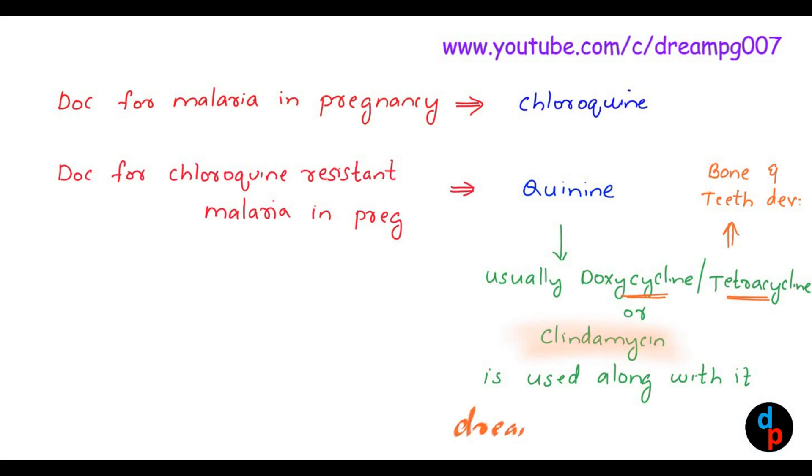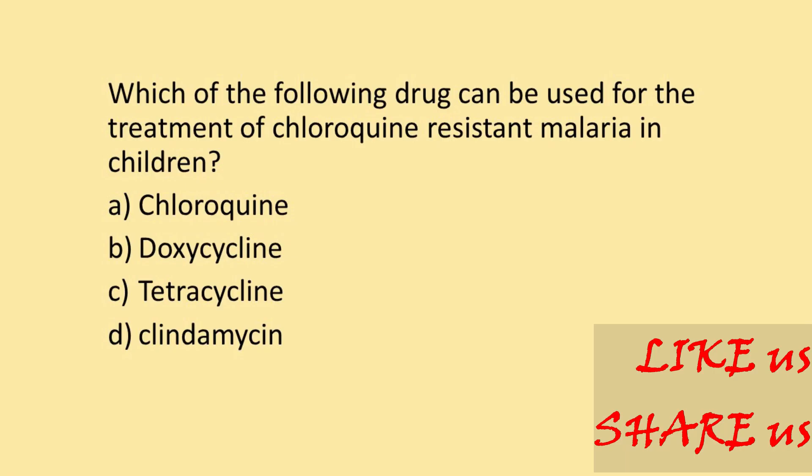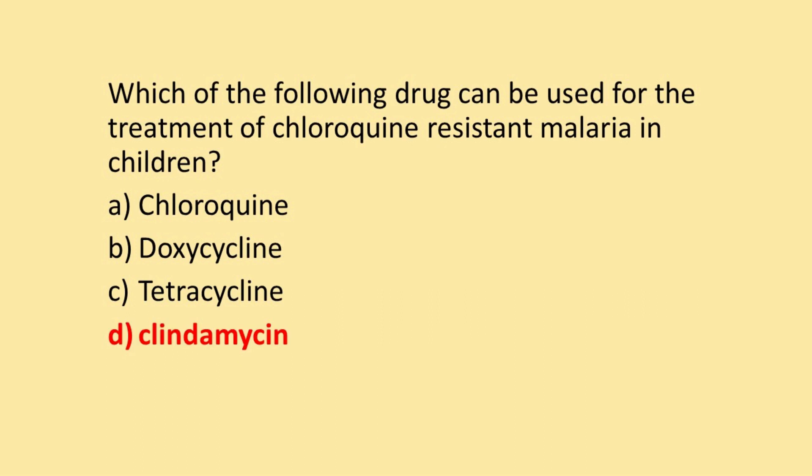Let's answer this question: Which of the following drugs can be used for the treatment of chloroquine-resistant malaria in children? Option A: chloroquine. Option B: doxycycline. Option C: tetracycline. Option D: clindamycin. The answer is clindamycin.